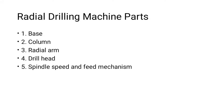Today's topic is about radial drilling machine parts. Before starting, we have already covered radial drilling machines and the types and number of movements possible. These include plain radial drilling machines with vertical, horizontal, and swinging movement; semi-universal radial drilling machines with four movements; and universal radial drilling machines with five movements. Now let's see what are the parts of the radial drilling machine.